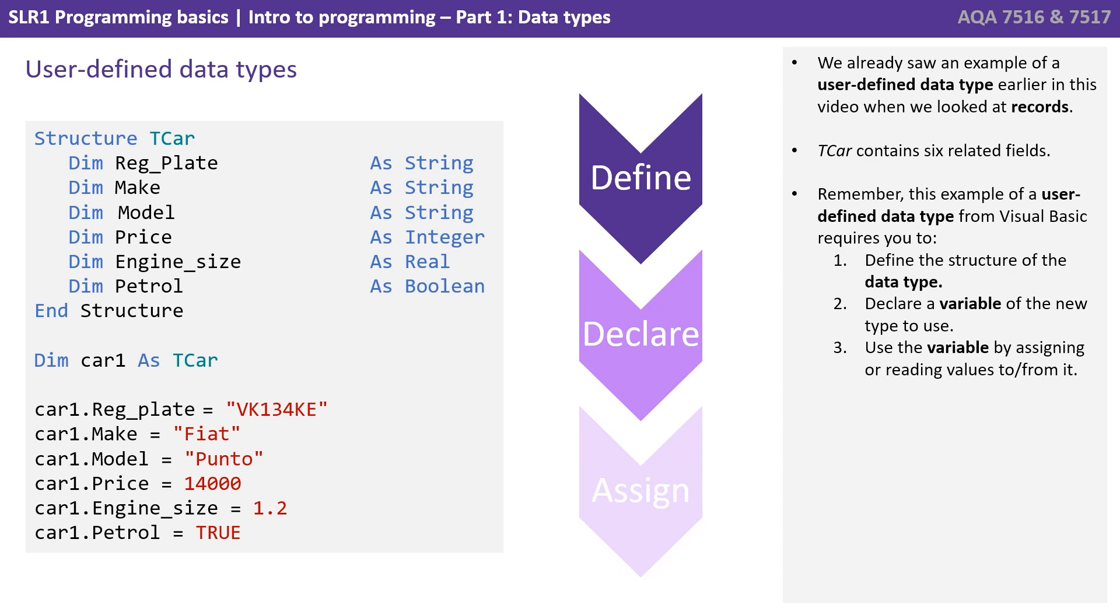We already saw an example of a user defined data type earlier in this video when we looked at records. T car contained 6 related fields. Remember this example of a user defined data type from Visual Basic required you to define the structure of the data type, declare a variable of the new data type to use, and then use the variable by assigning or reading values to and from it.